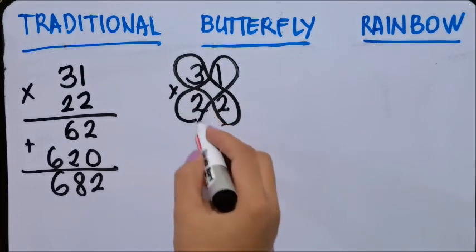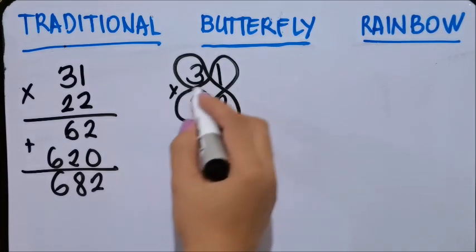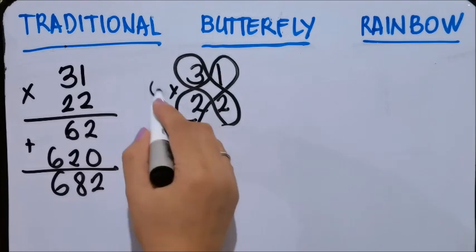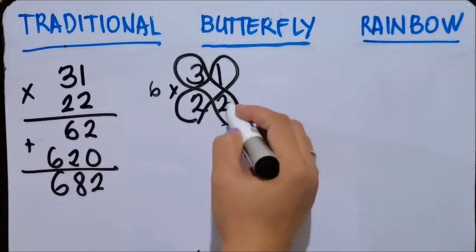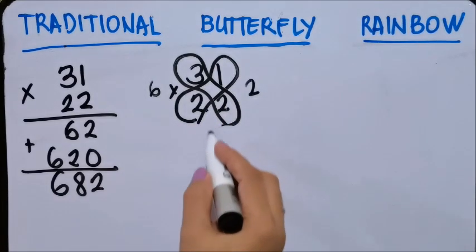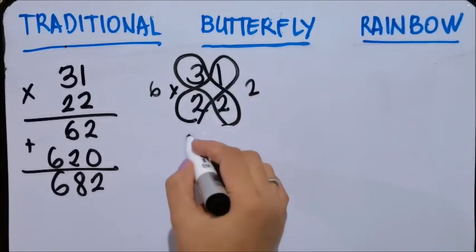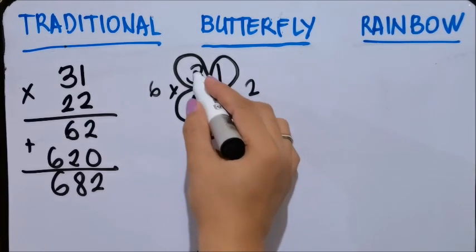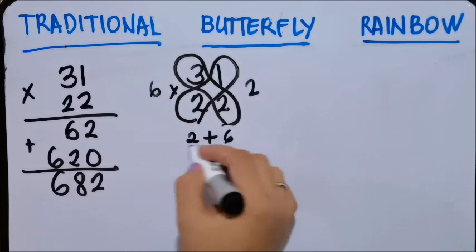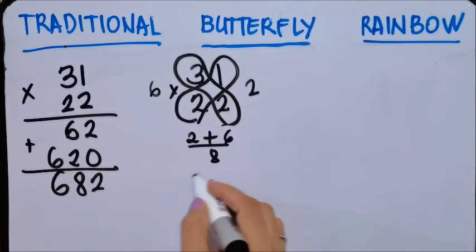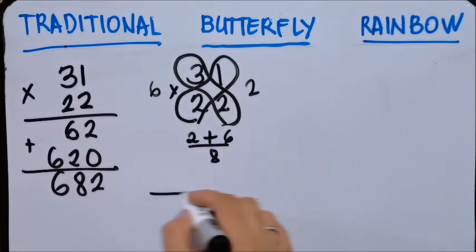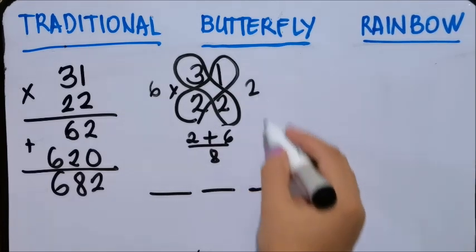Okay, so from here you have to multiply this and then this one. First digit first: 3 times 2 is 6, 2 times 1 is 2, and then 2 times 1 is 2 plus 3 times 2 is 6, so this is 8.